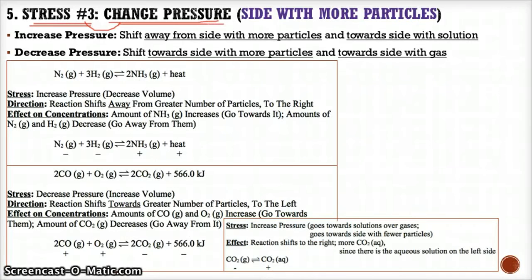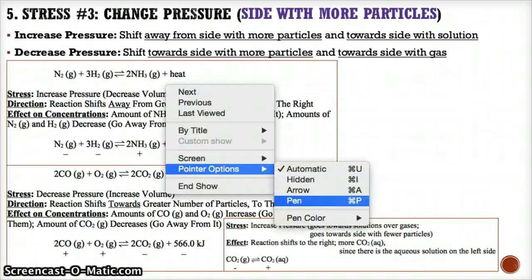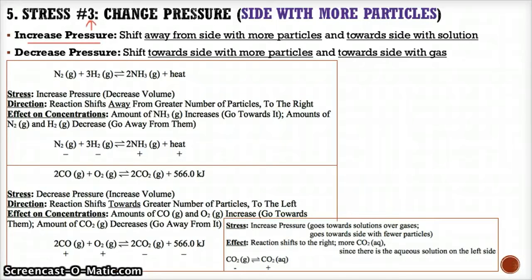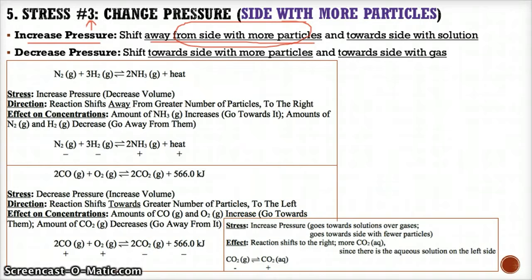Our final stress is a change in pressure. When dealing with pressure changes, circle the side with more particles, and use that to decide which direction to go. When you increase pressure, think of it as pressing down on a container — you're squeezing too many particles into too small a space. To de-crowd it back to equilibrium, shift away from the side with more particles. Also, when comparing solution versus gas, you do not want gas when pressure is increased, so go towards the side with the solution.